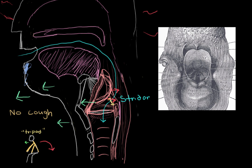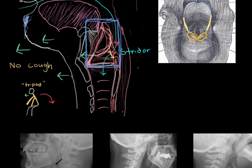Those are some clinical signs that a health practitioner can use to help diagnose epiglottitis. Diagnosis itself comes by direct visualization of the swollen epiglottis. Epiglottitis also includes swollen aryepiglottic folds as well as the arytenoid cartilage. So really anything in that region that is swollen would be diagnosed as epiglottitis.